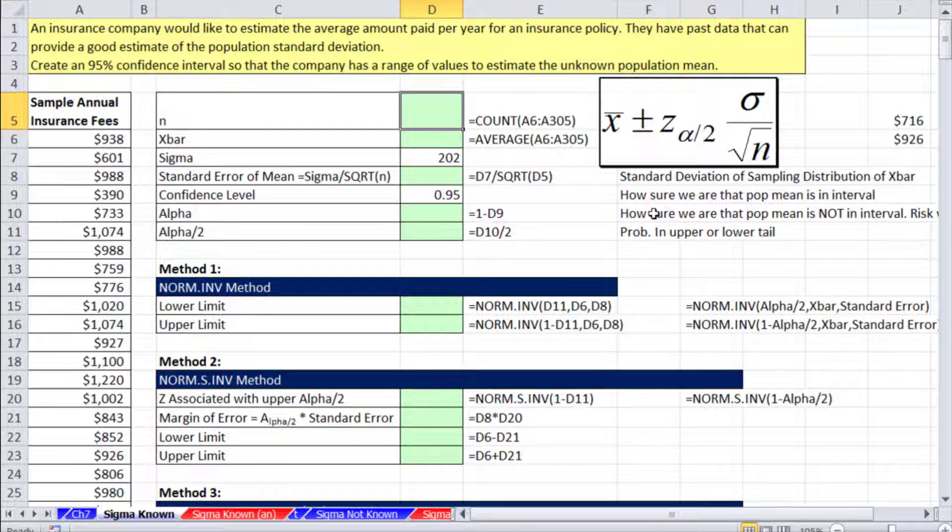Since we're trying to estimate the population mean using sample statistics, we can't just say sample statistics equals population mean. We calculate the sample mean, add some margin of error on either side, and give a range of values as our estimate for the population mean. An insurance company would like to estimate the average amount paid per year for an insurance policy. They have past data that can provide a good estimate of the population standard deviation. Create a 95% confidence interval so the company has a range of values to estimate the unknown population mean.